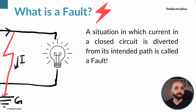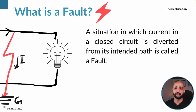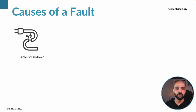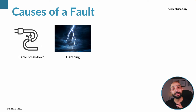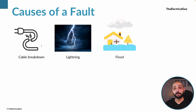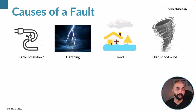There can be multiple reasons why current is diverted from its intended path. One reason is a cable breakdown causing current to go in a different direction. There can also be a lightning stroke causing the fault, or flood situations, or high-speed wind causing two transmission lines to connect to each other.